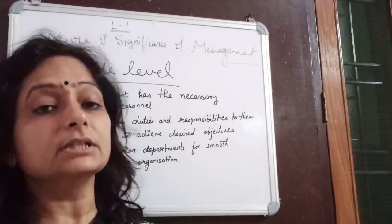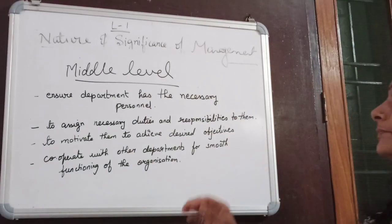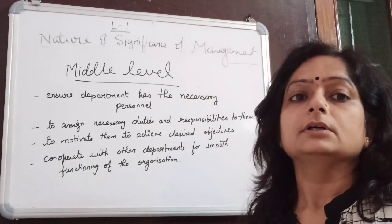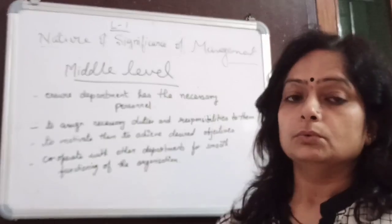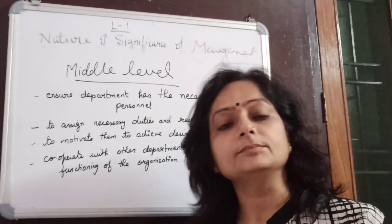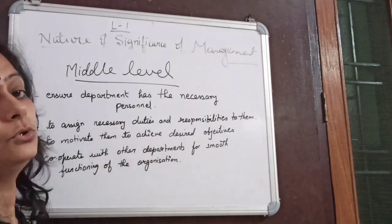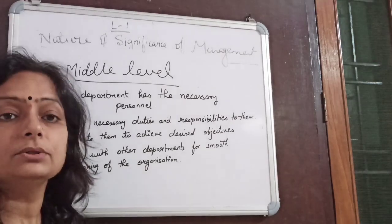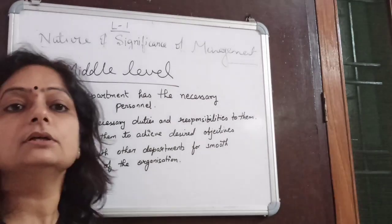The functions of middle level managers include: ensuring each department has the necessary personnel, assigning the necessary duties and responsibilities to them, motivating them to achieve the desired objectives, and cooperating with other departments for smooth functioning of the organization. As in any business, cooperation between departments is essential to achieve organizational goals.